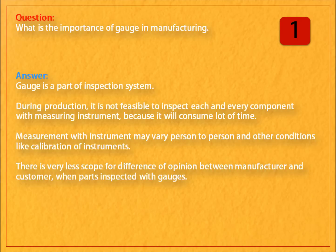Answer: A gauge is a part of the inspection system. During production, it is not feasible to inspect each and every component with a measuring instrument, because it will consume a lot of time. Measurement with an instrument may vary person to person due to conditions like calibration. There is very less scope for difference of opinion between manufacturer and customer when parts are inspected with gauges.